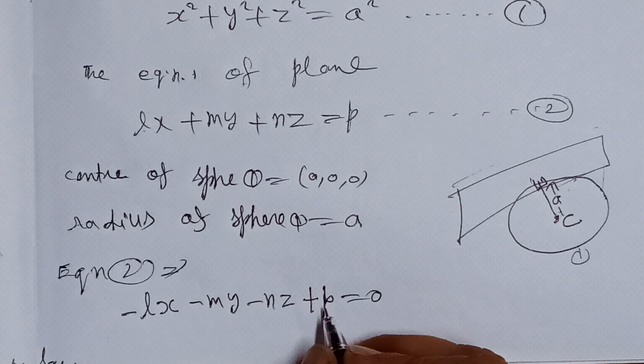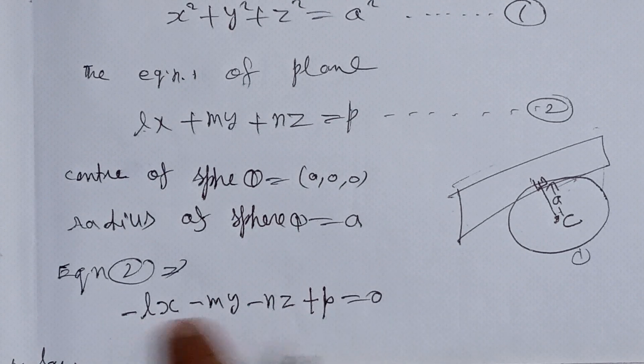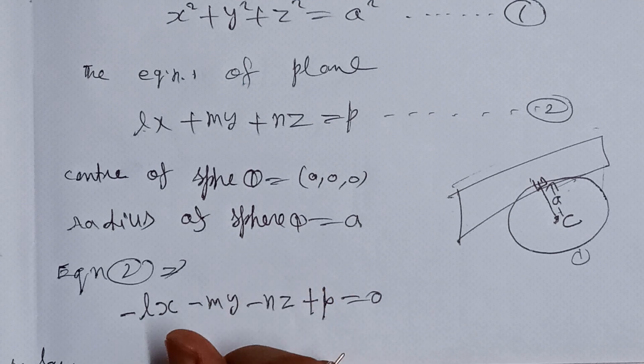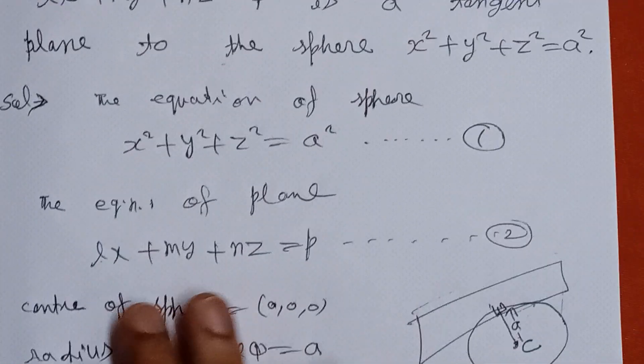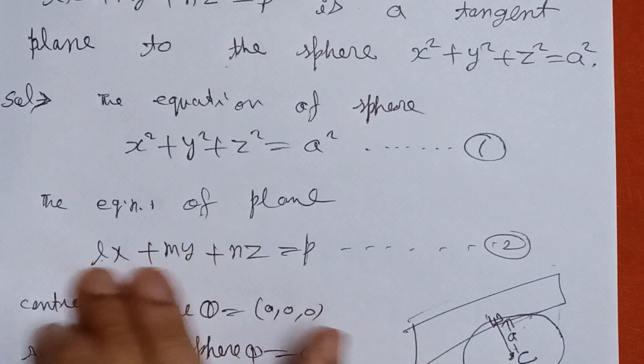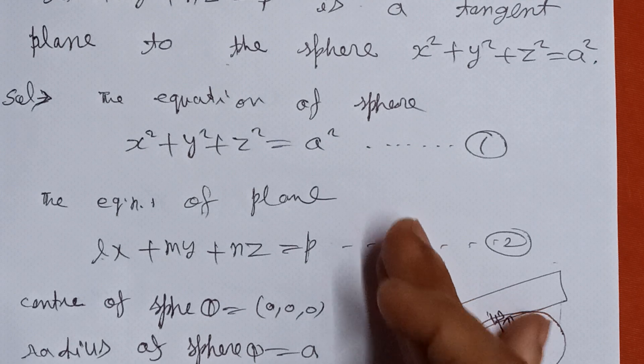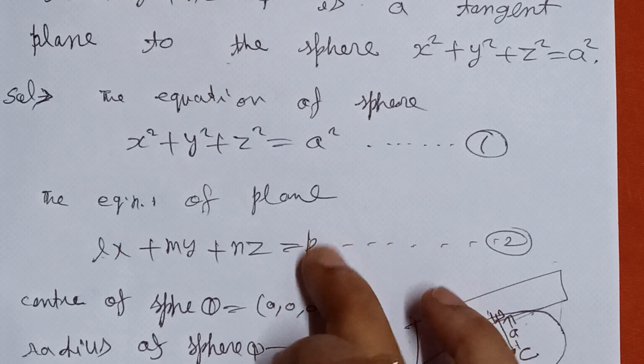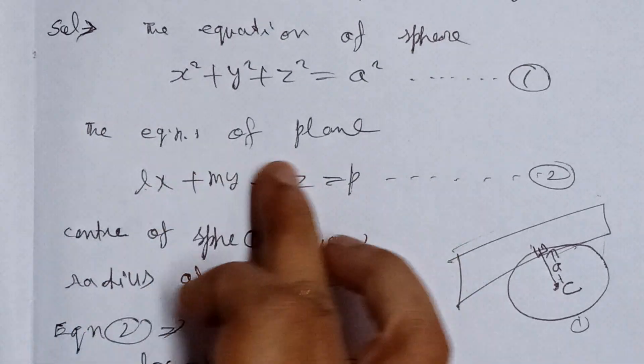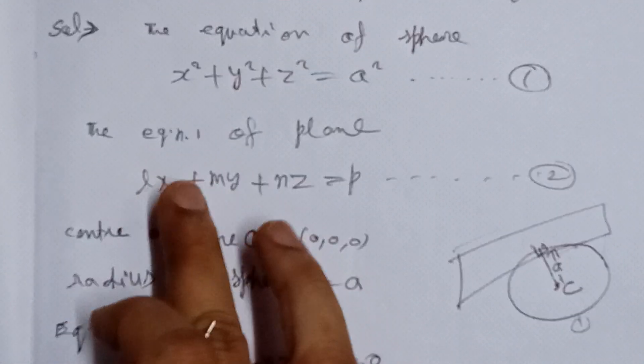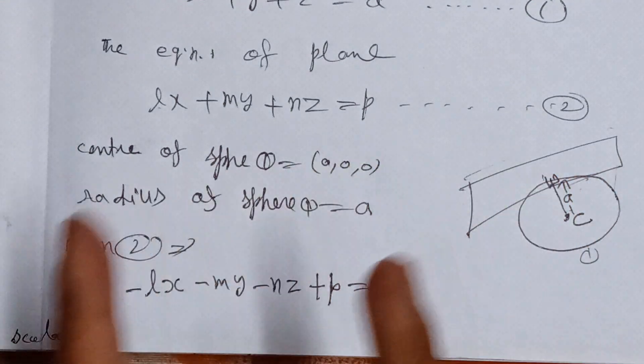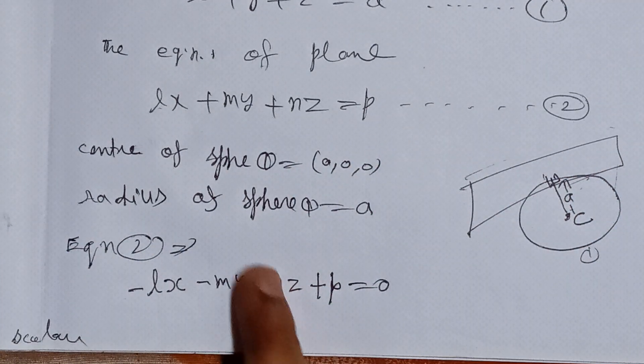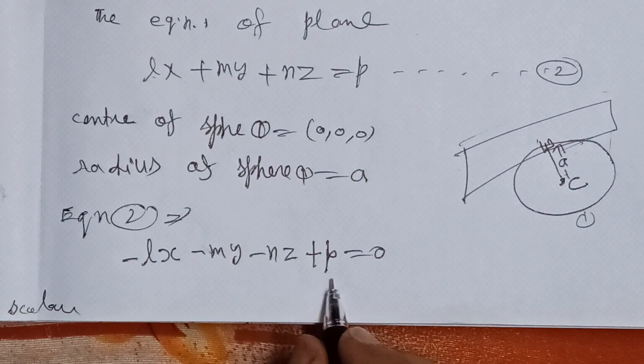We can make the constant term positive and all other terms negative, or we can write this equation as making the constant positive so that we can apply the condition of tangency.